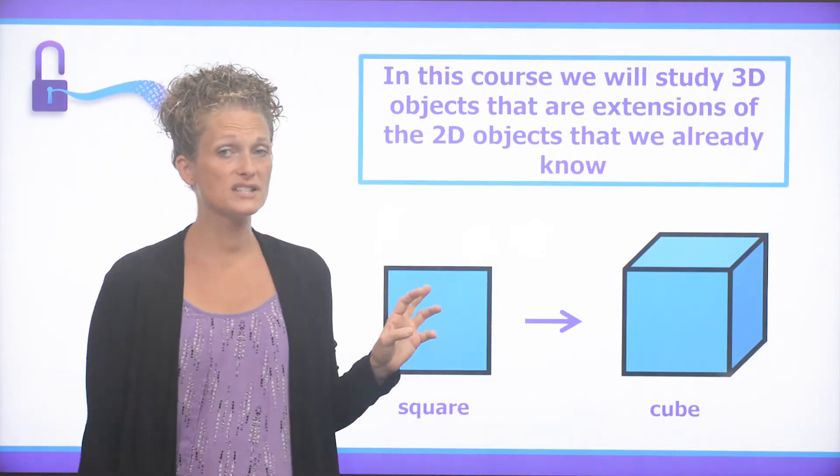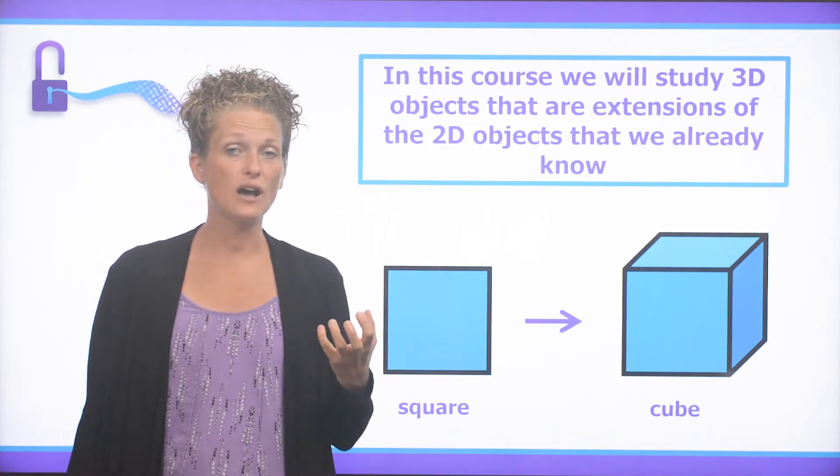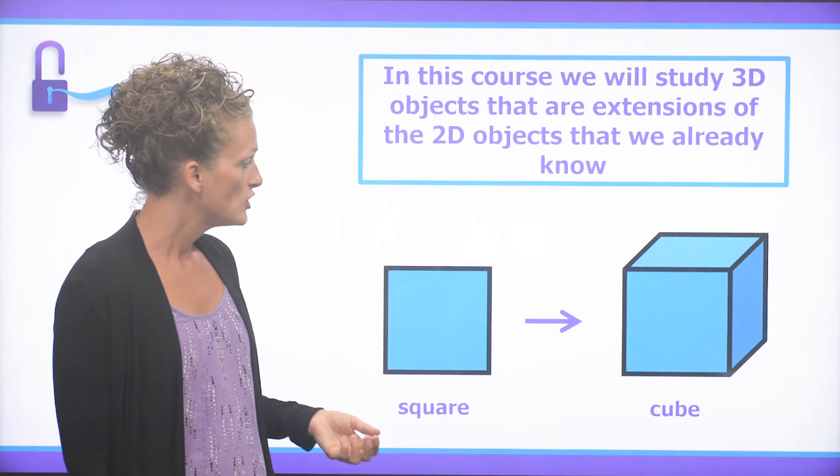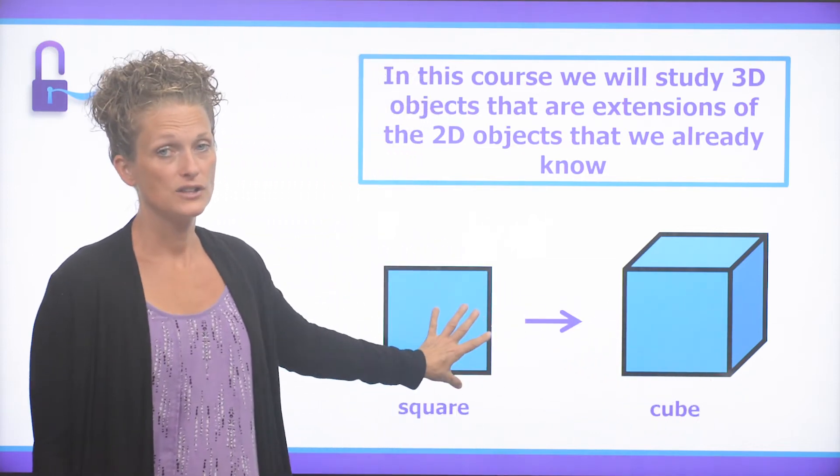Now, in this course, we're going to study 3D objects that are actually extensions of the 2D objects or 2D shapes that we already know. So the cube is the 3D extension of the square.